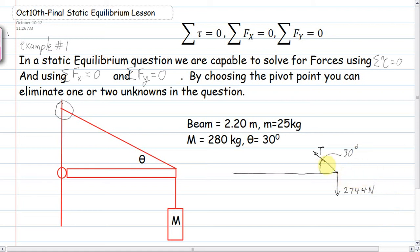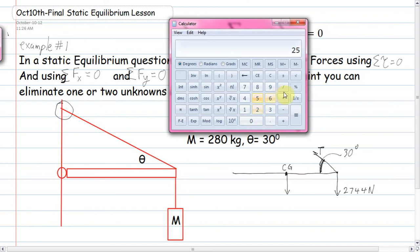But I kind of like just doing the 280 times 9.8 and getting the number right in our free body diagram this time. 2744. So 2744 newtons. So that's a force pulling down at that point. And there's a tension T. And we don't know. We know this angle.